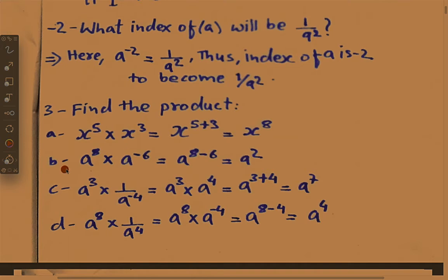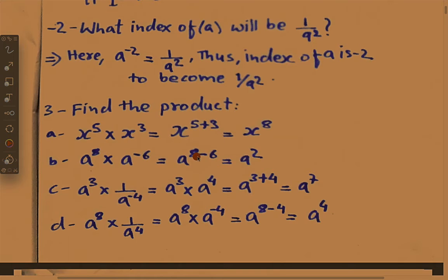B number: a power 8 into a power minus 6. Here also multiplication, so addition shall be done again. Base is same — a equals a — and powers shall be added. It means 8 and minus 6, so 8 minus 6 equals 2. Equal to a power 2, or a squared.